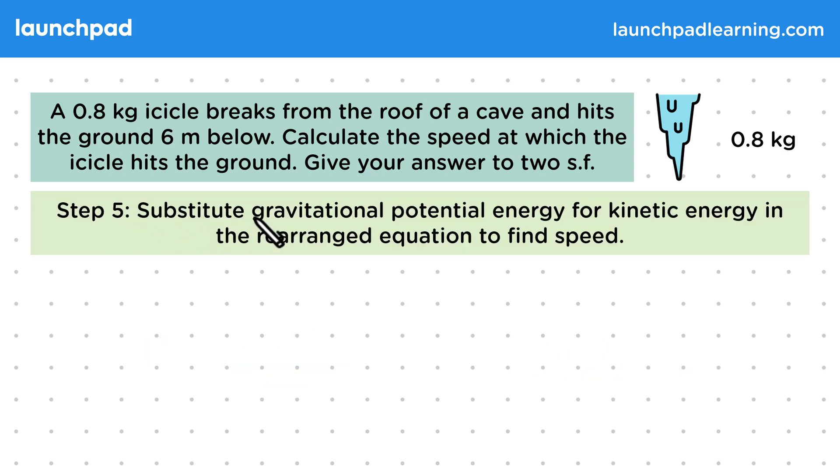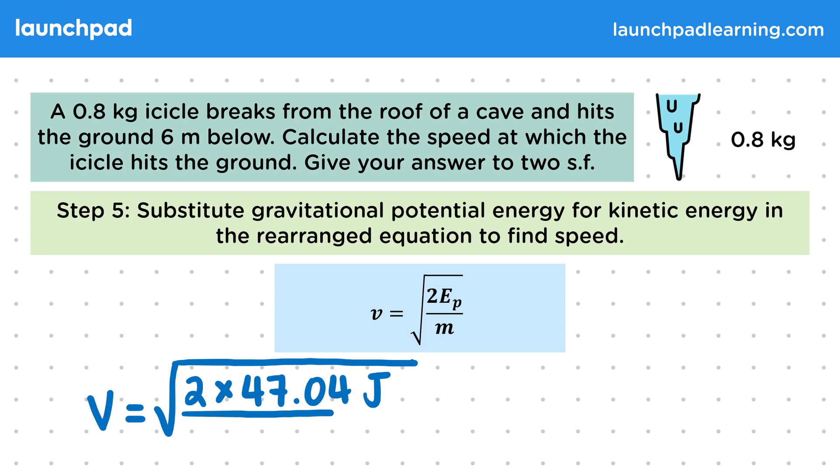Then for step five, let's substitute the gravitational potential energy for kinetic energy in the rearranged equation to find speed. And we can use our potential energy value here, as all of the potential energy will be converted to kinetic energy. So the equation becomes v is equal to the square root of 2EP divided by m. So v is equal to the square root of 2 times by 47.04 joules divided by 0.8 kilograms, and that gives us 10.8443 meters per second.